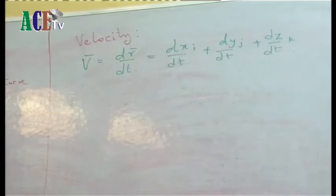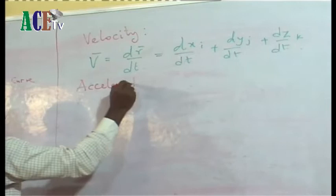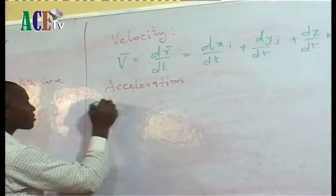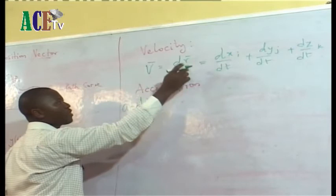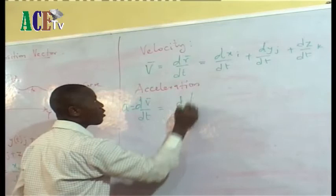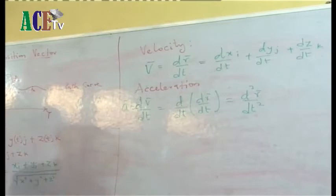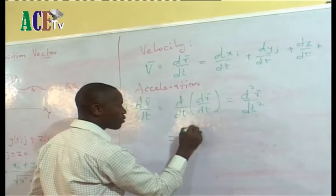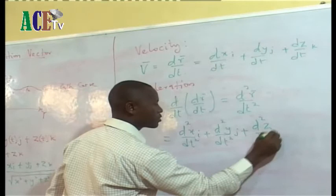From the velocity, we can define the acceleration. We know acceleration is the rate of change of velocity with time. So our acceleration is defined as the rate of change of velocity with time. Don't forget that our velocity is change in position vector with respect to time, so we have d/dt of dR/dt, which is d²R/dt². It means we differentiate R twice with respect to time. We can write this as d²X/dt² i plus d²Y/dt² j plus d²Z/dt² k.